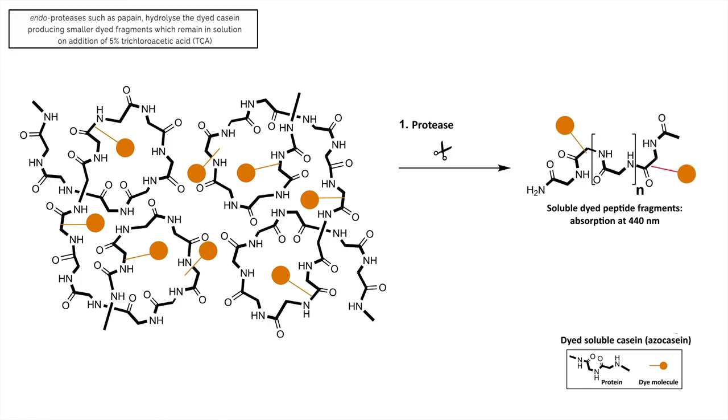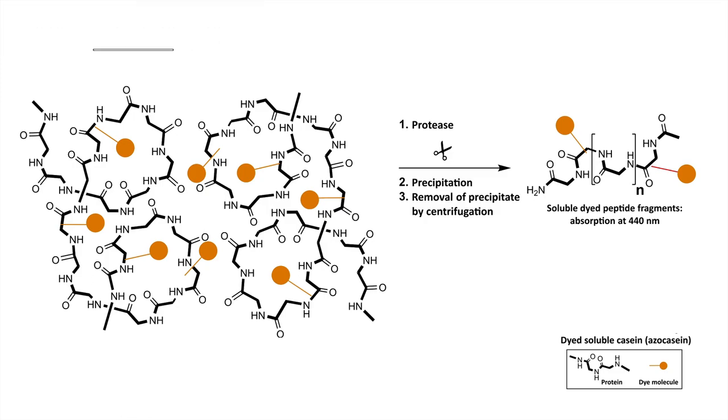These fragments remain in solution on addition of 5% trichloroacetic acid. The non-hydrolyzed azo casein precipitates from solution upon addition of the TCA and is removed by centrifugation.